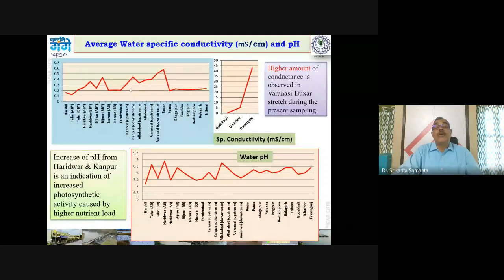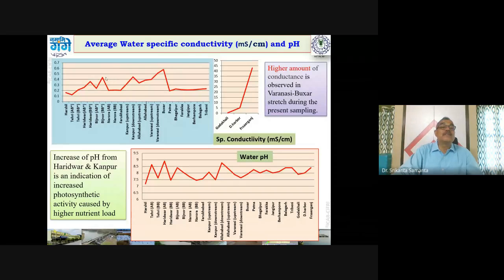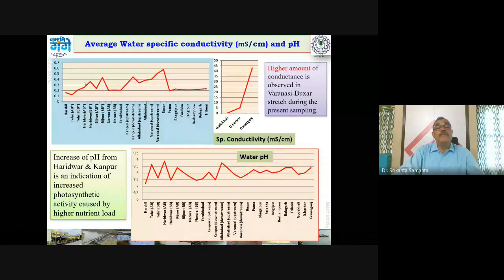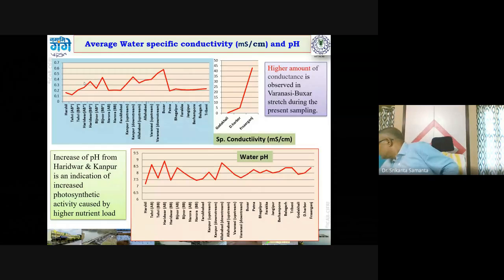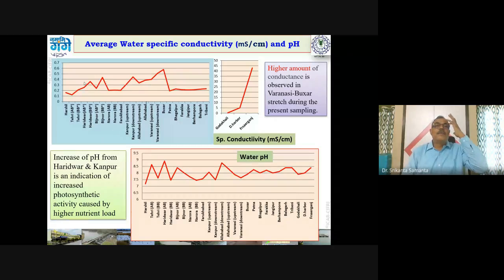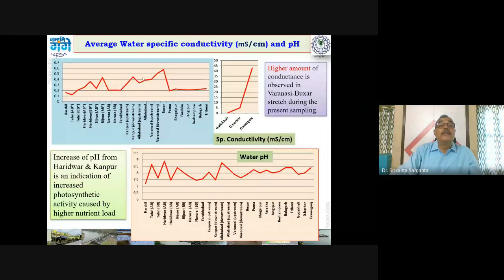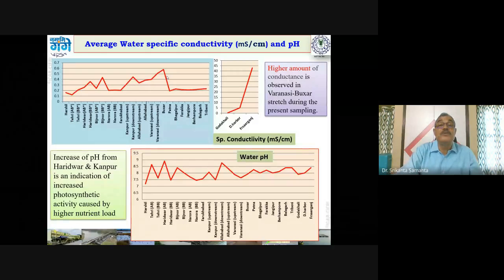Conductivity is an important parameter expressing salt content. In a freshwater stretch, when it goes beyond 300 microsiemens (0.3 millisiemens), it indicates pollution from anthropogenic activities — domestic or industrial effluents. Sites like Bijnor, Kanpur, and Varanasi are indicating a moderate amount of pollution in this river system.